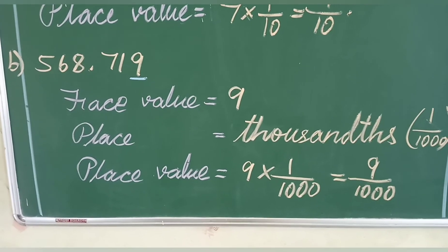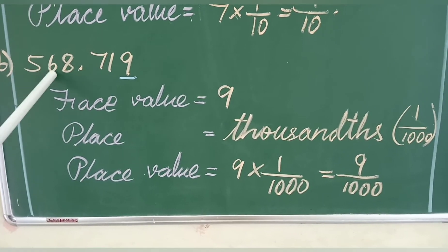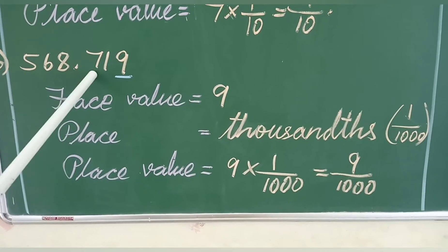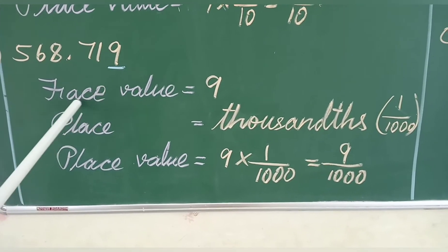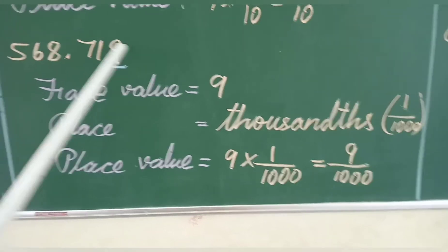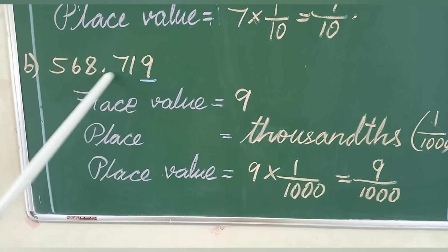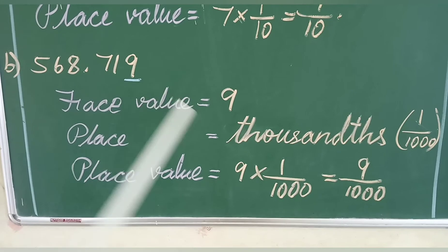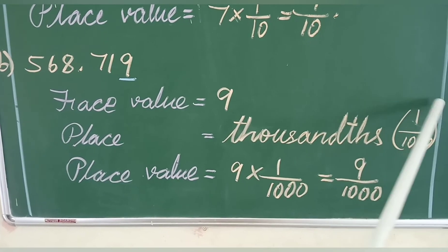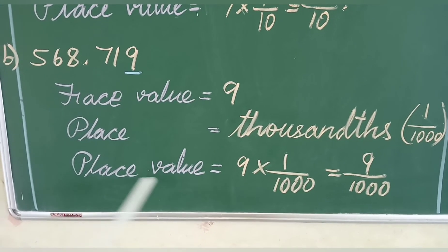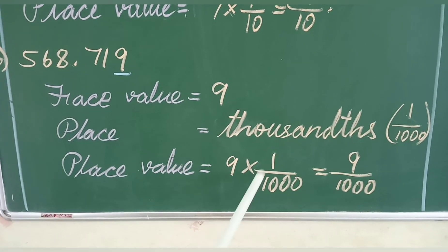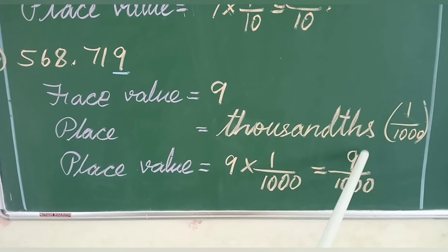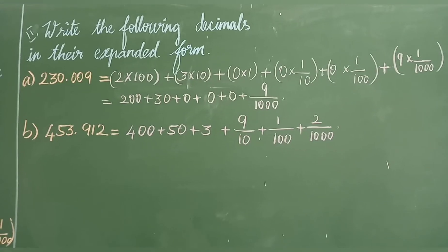The next one: 568.719. For the digit 9, face value is 9, place is thousandths (1 by 1000), so place value equals 9 into 1 by 1000, which equals 9 by 1000.